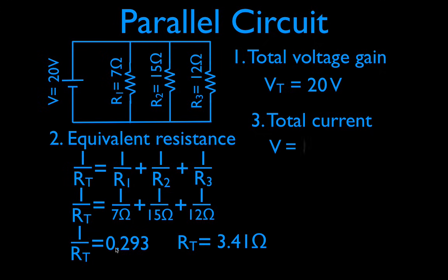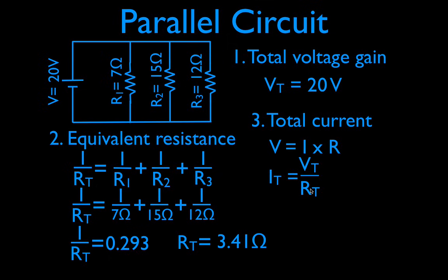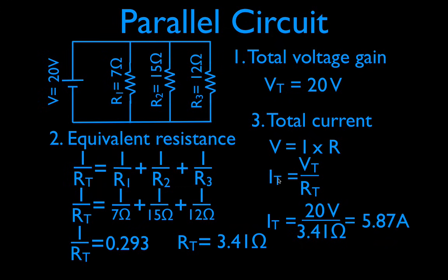Now let's get the total current. We're going to use Ohm's Law and solve for I. I write down IT because it's the total current, which is different from the current through each branch. The total current equals the total voltage divided by the total resistance. IT equals 20 volts divided by 3.41 ohms, and therefore the total current is 5.87 amps. Now we have the total voltage, the total resistance, and the total current — those are the first big three things we needed.